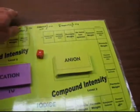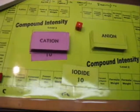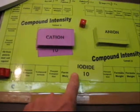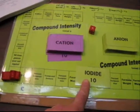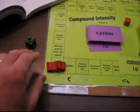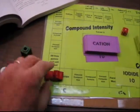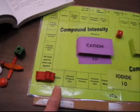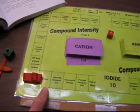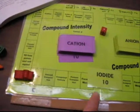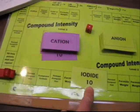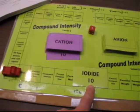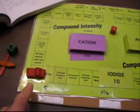All other teams playing will also write down the symbol and charge for this anion. The team who turns it in will then show their answer to you. If it's correct, they'll earn that number of points there. In this case, that team will earn ten points.